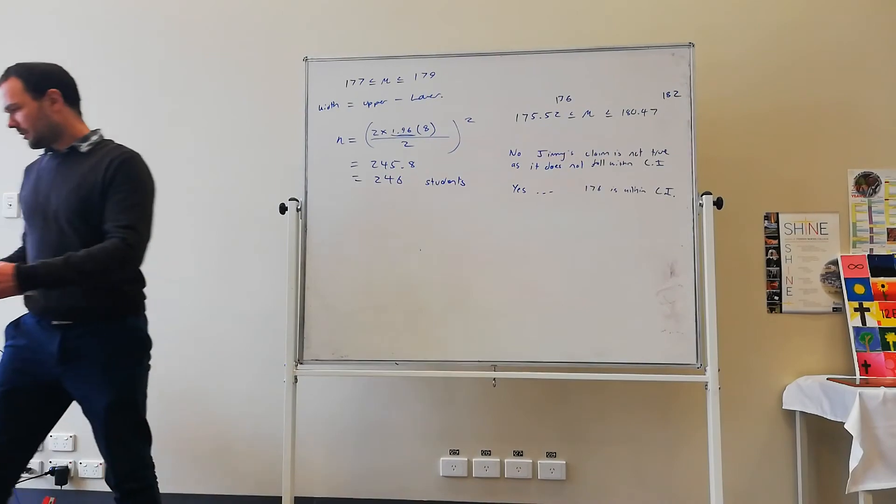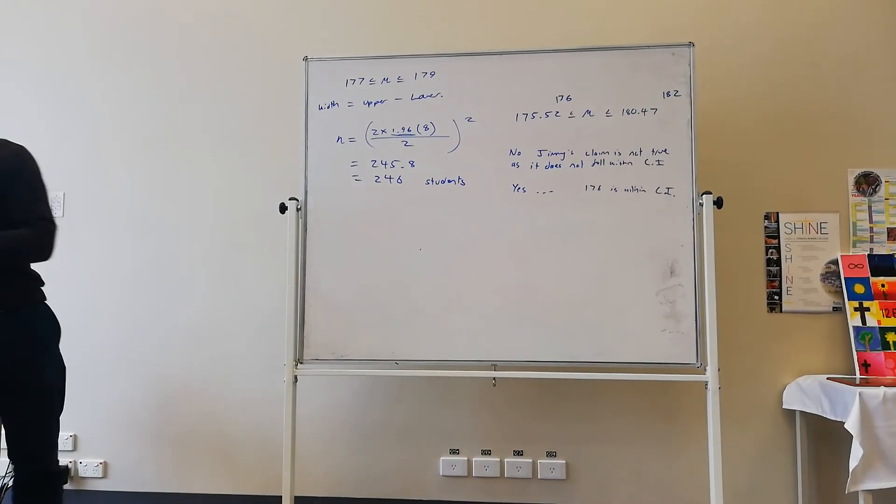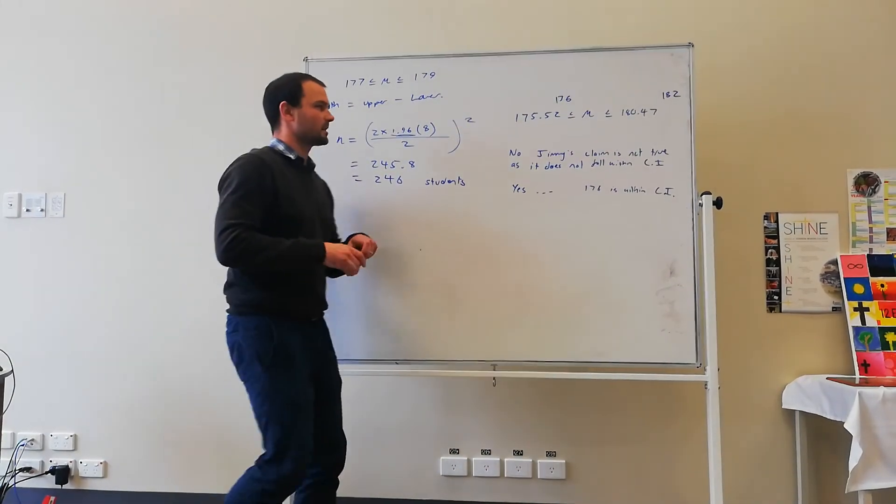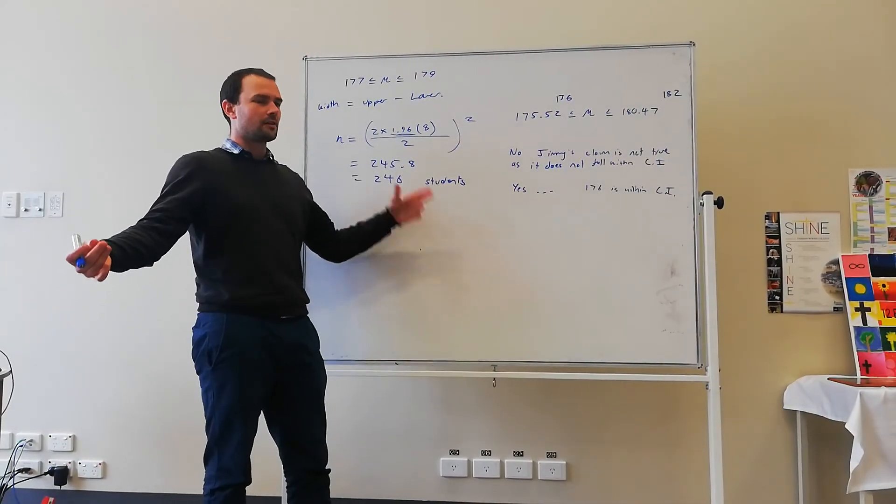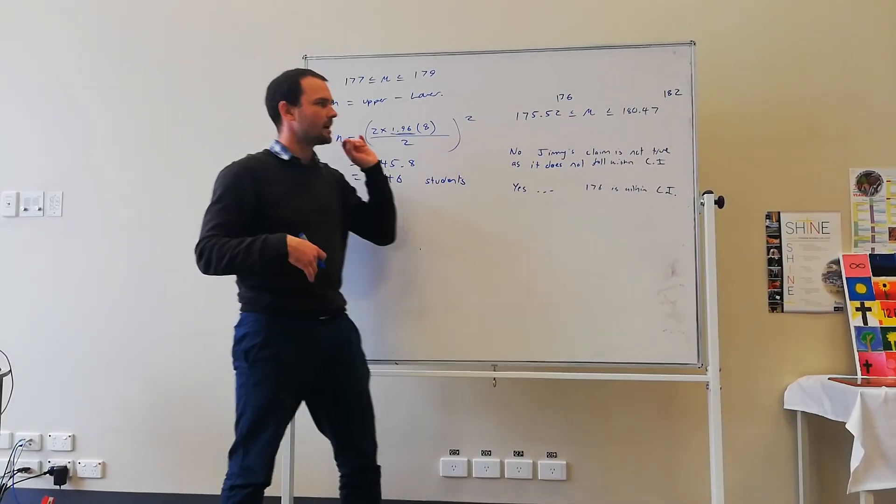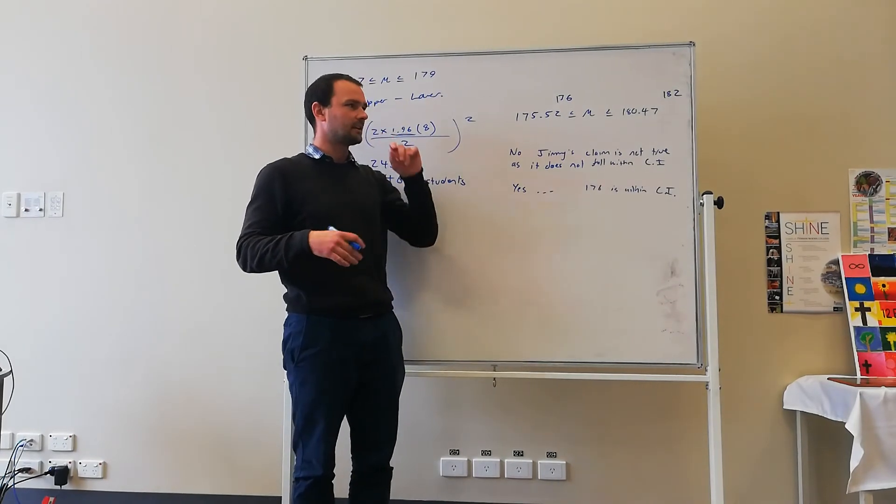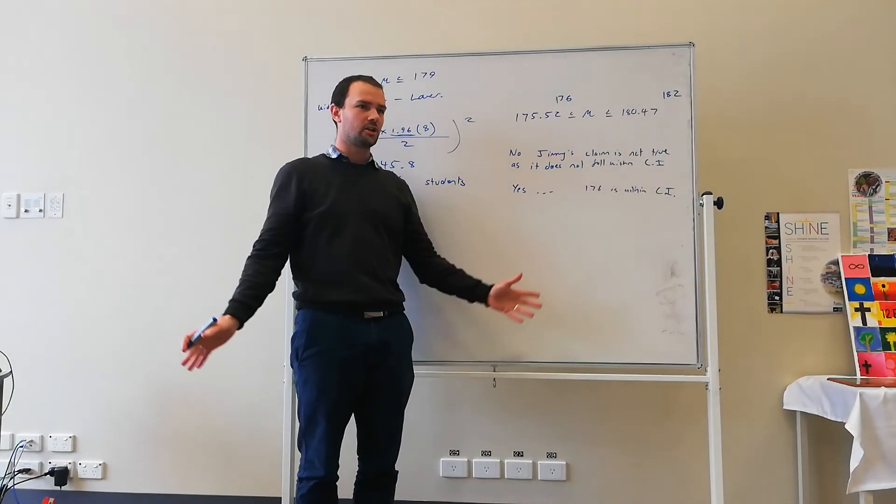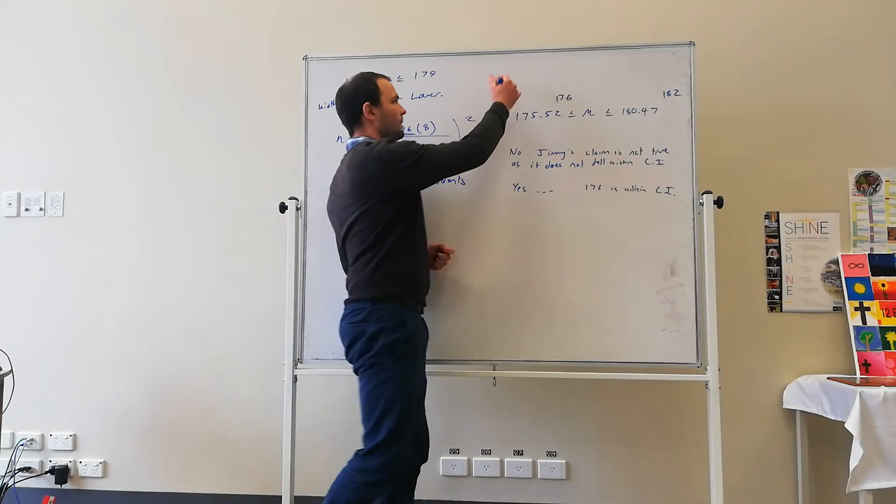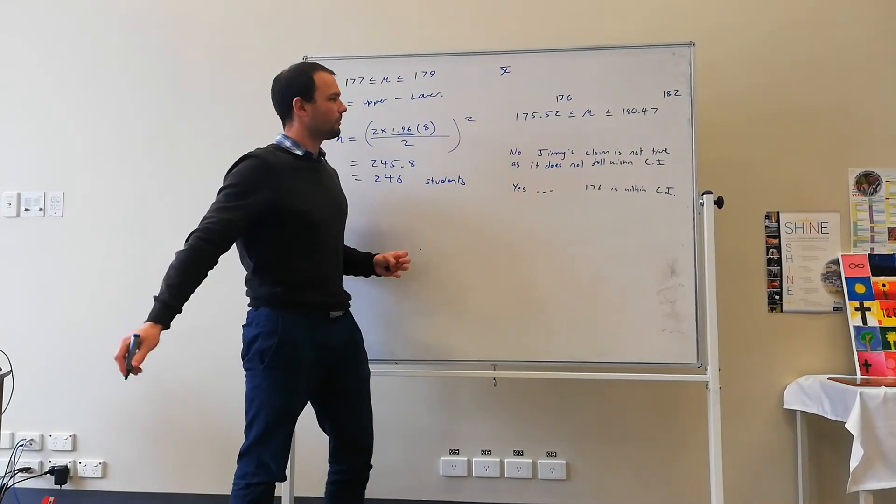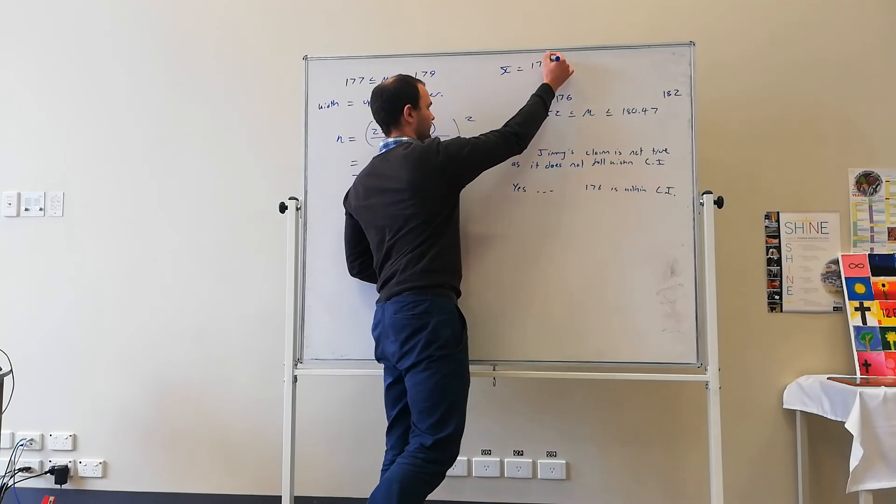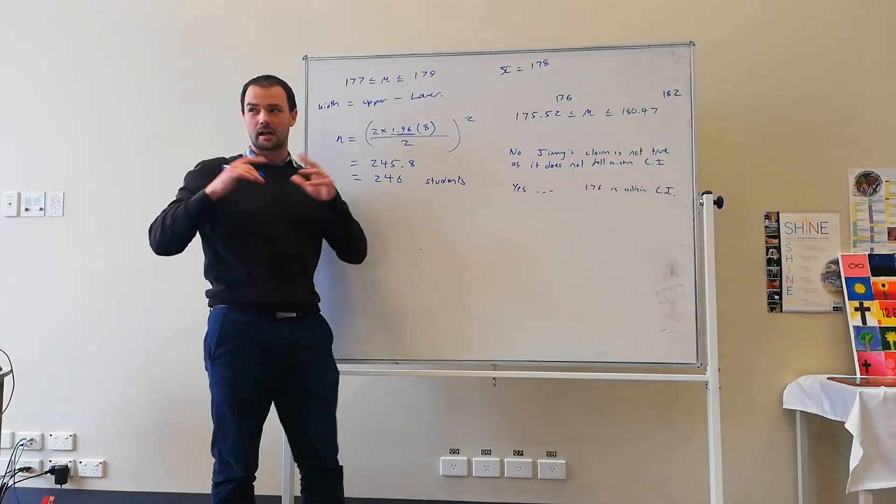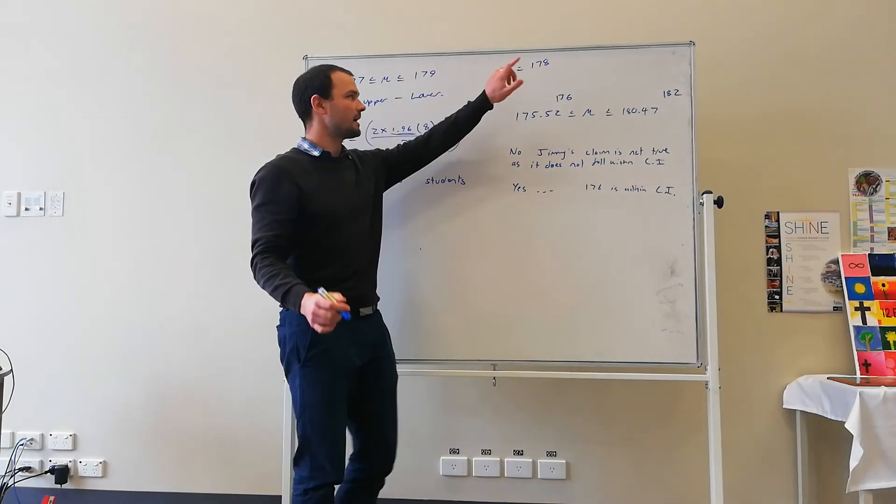So just a reminder what a confidence interval is. We've performed a sample and we've got a sample mean. And we're using the sample mean and the sample standard deviation to make a claim about the population. And so we're saying, remember x bar represents the sample mean. And in our year 12 example it was 178cm. That's from the sample.